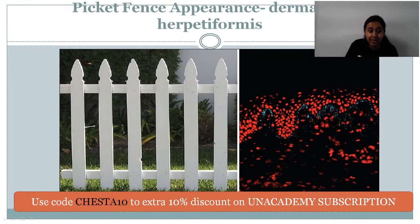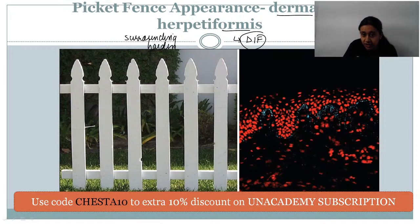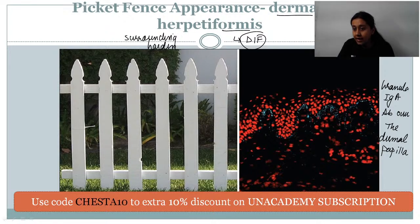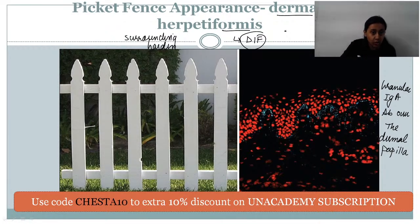The picket fence appearance is seen in dermatitis herpetiformis — this is the direct immunofluorescence (DIF) finding. The bluish coloration is because of deposition of IgA antibodies over the dermal papillae. Granular deposition of IgA over the dermal papillae is very characteristic of dermatitis herpetiformis, seen especially on direct immunofluorescence study.